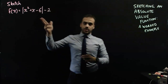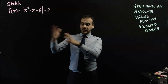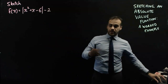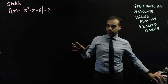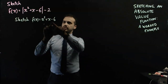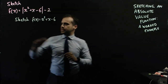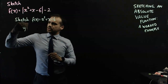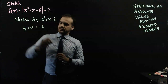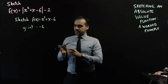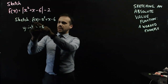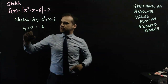Sketching x squared plus x minus 6 — that's a quadratic and we should know how to sketch it. The bits I'm going to need: I'm going to need a y-intercept. That's this number here, so the y-intercept equals negative 6. I'm going to need x-intercepts, so I'm going to have to solve for when f of x equals 0.